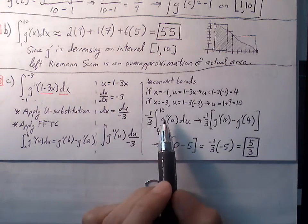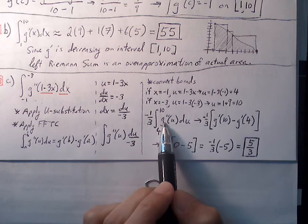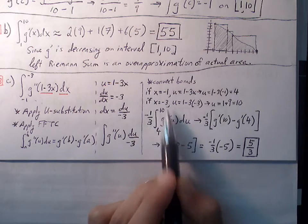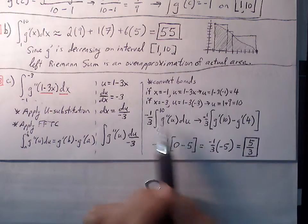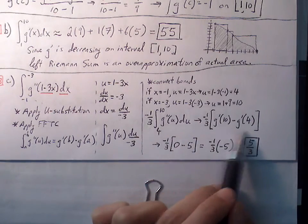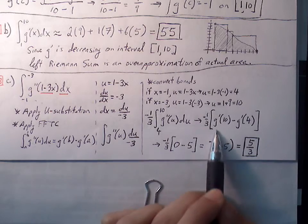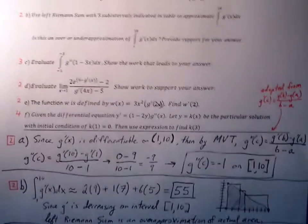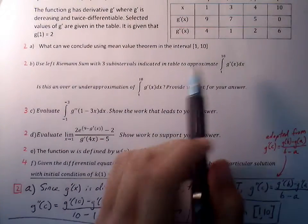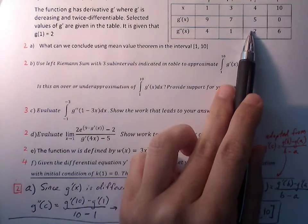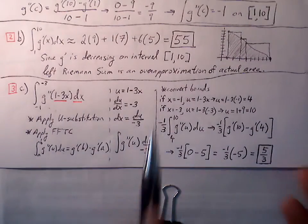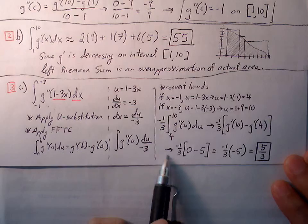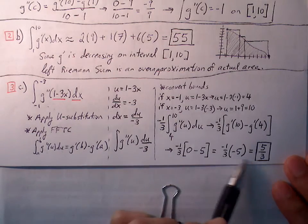Now we can apply the antiderivative: G double prime pushes up a level to G prime. We evaluate G prime at our upper and lower bounds: negative one third times G prime of ten minus G prime of four. Using our table: G prime of ten is zero and G prime of four is five. So we have negative one third times zero minus five, which gives us negative one third times negative five, equal to five thirds.